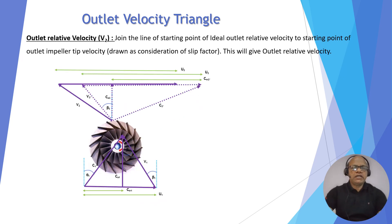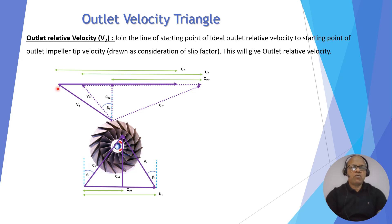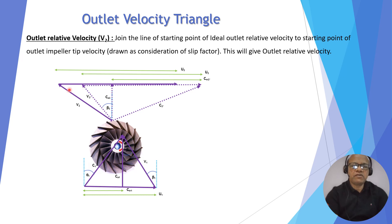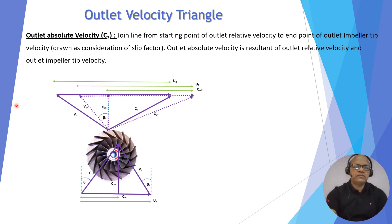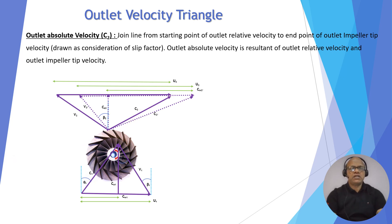Now the outlet relative velocity V2: join the starting point of V2-dash and the starting point of U2 — this gives the outlet relative velocity V2, where the slip factor is considered. U2 is drawn with consideration of the slip factor. For outlet absolute velocity C2, join the starting point of V2 and the end point of U2 with consideration of slip factor — C2 is the outlet absolute velocity.